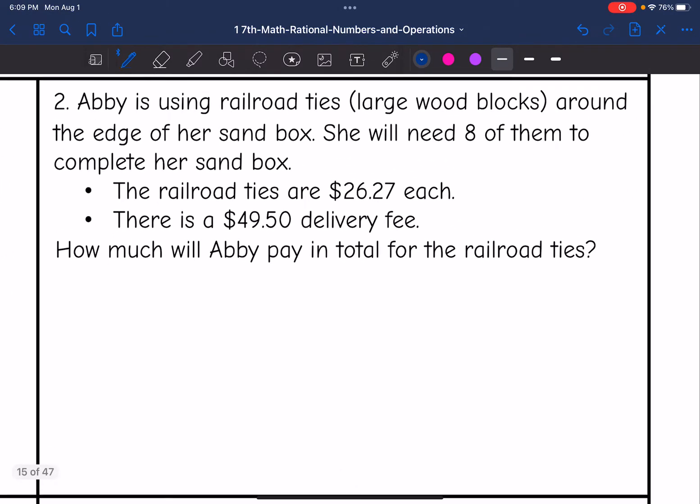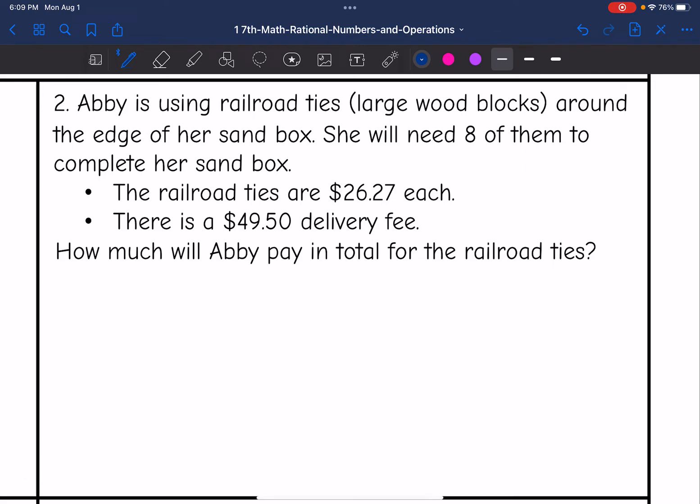Let's look at number two. Abby is using railroad ties or large wood blocks around the edge of her sandbox. She will need eight of them to complete her sandbox. The railroad ties are $26.27 each and there is a $49.50 delivery fee. How much will Abby pay in total for the railroad ties? So she's going to need eight of the railroad ties that are $26.27 each. So we will have to multiply that by eight, and then we will have to add the delivery fee to that.